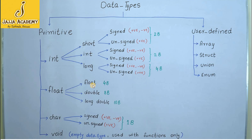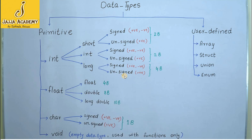It is just like when we write 5, it is understood to be a positive 5. Unless we mention a negative sign, we consider it a positive value. Similarly, unless unsigned is mentioned with a data type, that data type is considered signed. Float, double, and long double are all signed data types, and we cannot use the unsigned keyword with them because we cannot restrict floating point numbers to positive values only.